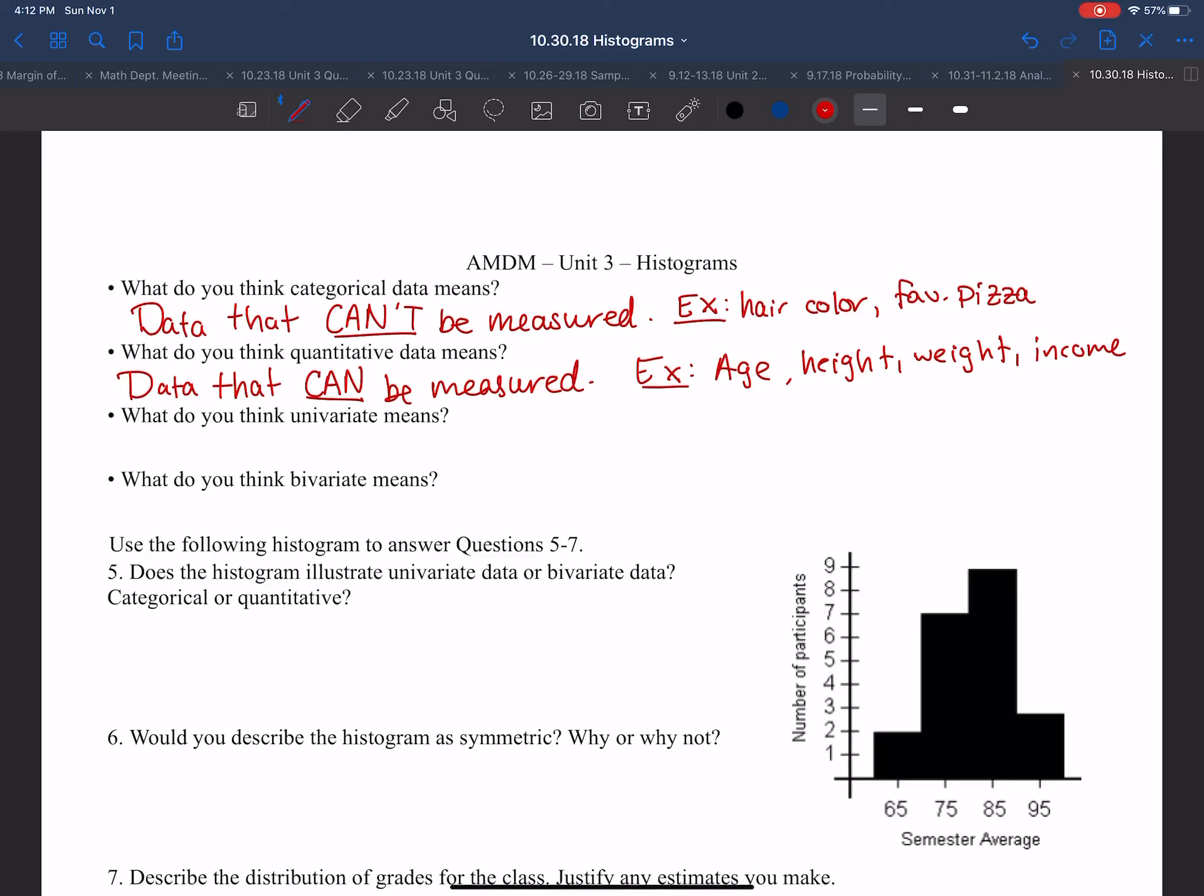What do you think univariate means? Well, the prefix uni means one. So univariate means there is one variable. An example of this is height. If you're measuring just height of students, it would be univariate. What do you think bivariate means? Bi means two, so two variables. An example of this would be if you're measuring height and weight.